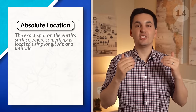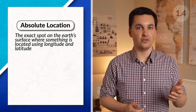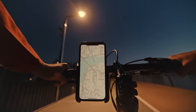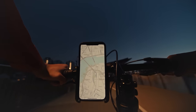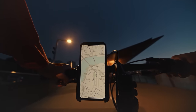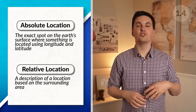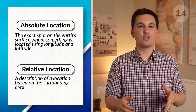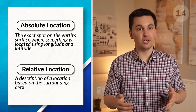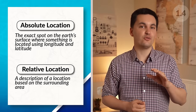Absolute location is an exact location on the Earth's surface using longitude and latitude. Think about your phone and GPS. The name of a location may change over time, but those coordinates will always remain the same. Relative location is the relation a place has to the surrounding area — for example, describing your location using the different buildings around you or geographic features of the area. It's not exact like absolute location, but it can still help you figure out a person's location.